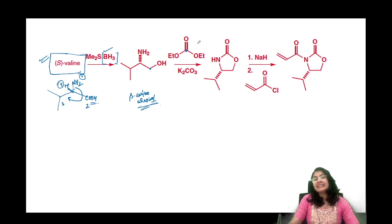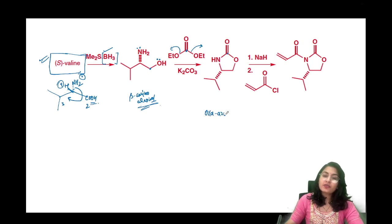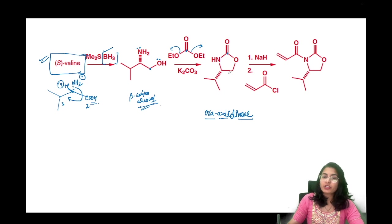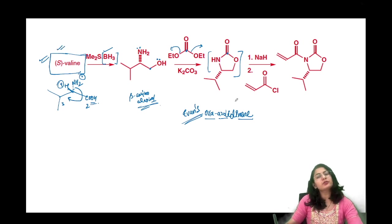This beta-amino alcohol is then reacted with diethyl carbonate. Both the amine and the OH replace the ethoxy groups one by one, forming a cyclic ring containing a ketone, nitrogen, and oxygen. This is called an oxazolidinone — 'oxa' for oxygen, 'azole' for a five-membered ring with nitrogen, 'one' for the carbonyl carbon. The specific name is Evans oxazolidinone, derived from S-valine, a natural amino acid.